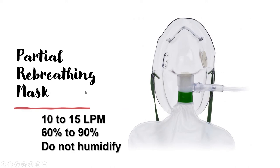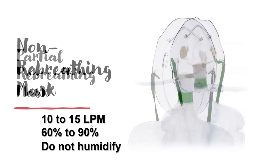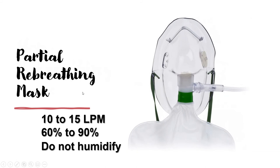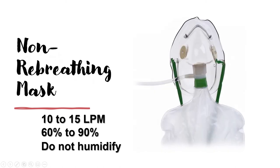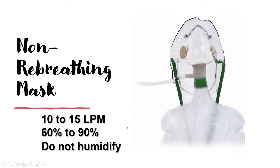There are two types of re-breathing masks: the partial and the non-rebreathing mask. The flow rate and delivered FiO2 are the same for both devices, but the difference is the presence of one-way valves. The non-rebreathing mask has three unidirectional valves — two on the sides of the mask and one between the reservoir and the mask. For the partial re-breathing mask, at least one entrainment port is not covered or doesn't have a one-way valve. Some partial re-breathing masks have only one one-way valve between the mask and the reservoir.